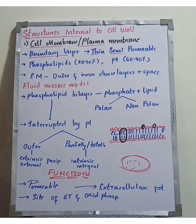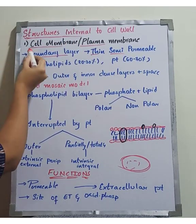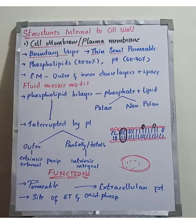In structures internal to the cell wall, first we have the cell membrane, and then we have the plasma membrane.